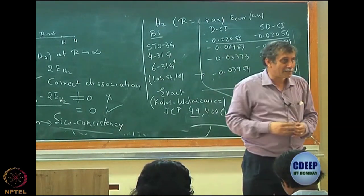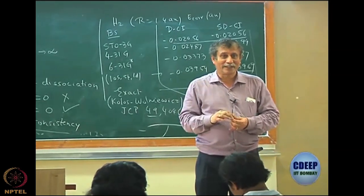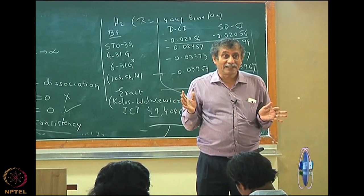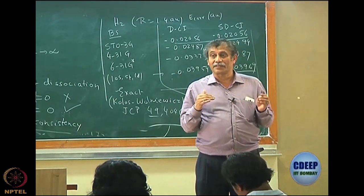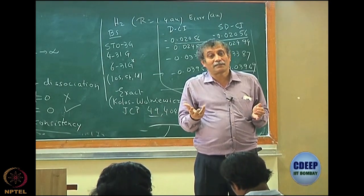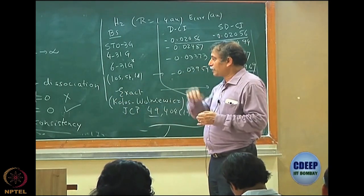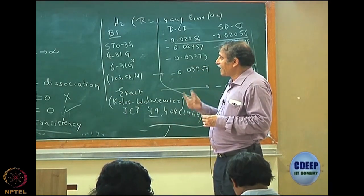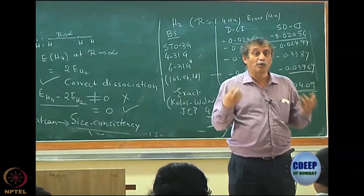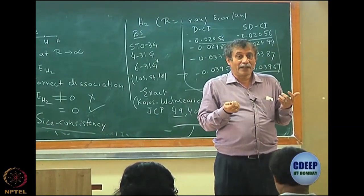Back-to-back papers in 1976 coined the term 'model theoretical chemistry.' People thought improving the energy was sufficient, but that is not good enough. In the next class we will discuss why DCI is not size consistent, what the physical effects are, and how MP2 correctly handles them.